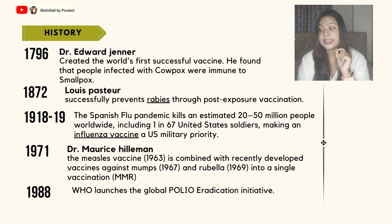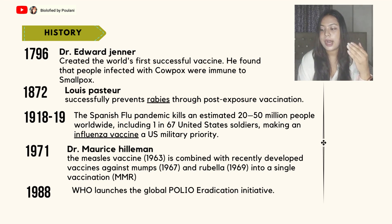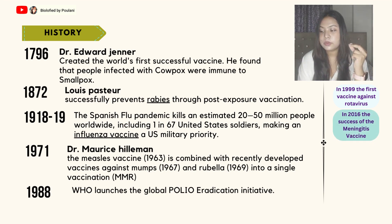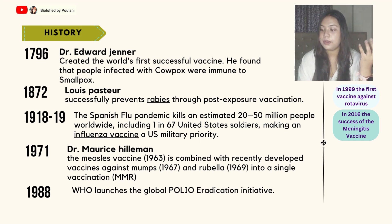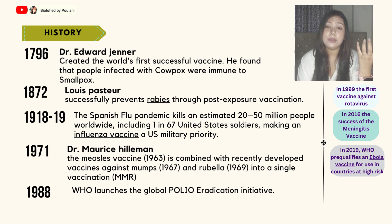Next, in the year 1988, the World Health Organization launched the Global Polio Eradication Initiative. In the year 1999, the first vaccine was developed against rotavirus. In 2016, the success of the meningitis vaccine was notable. In 2019, an Ebola vaccine was approved for use in countries at high risk — Africa was very badly affected by Ebola viruses, and a very good vaccine was developed for it.